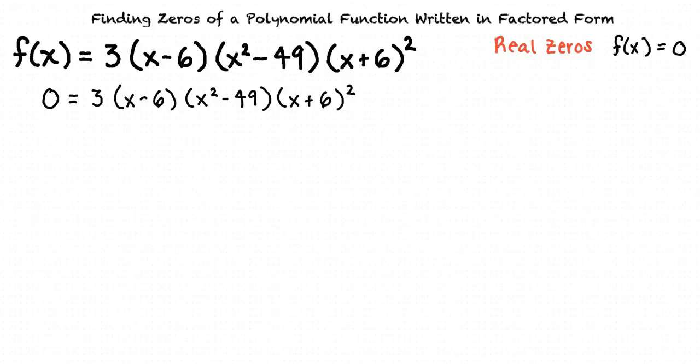First, we must factor the polynomials we still have in this equation. We must factor the polynomial x² - 49 and (x + 6)². The polynomial x² - 49 can be factored into (x - 7)(x + 7). (x + 6)² can be broken into (x + 6)(x + 6). So now that we have our function completely factored,